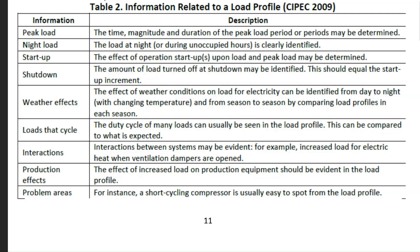Next is the startup load and shutdown load. This is the load which peaks very quickly and also falls very quickly during the starting and closing times of shifts. For example, this factory was operating from 8:30 to 5:30 for machine workers. As workers enter the factory and switch on their machines, the load peaks from around 8:20 AM to 8:40 AM, as some workers come 5 to 10 minutes early and a few may come 5 to 10 minutes late.